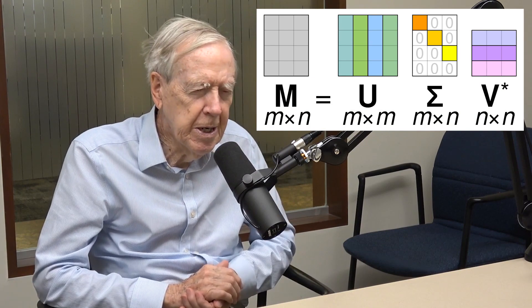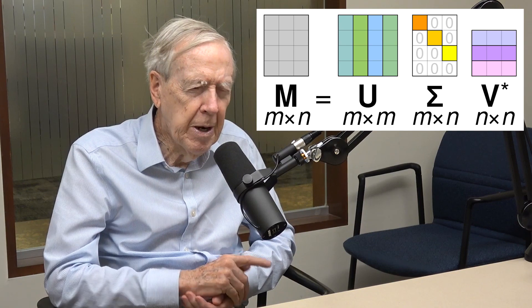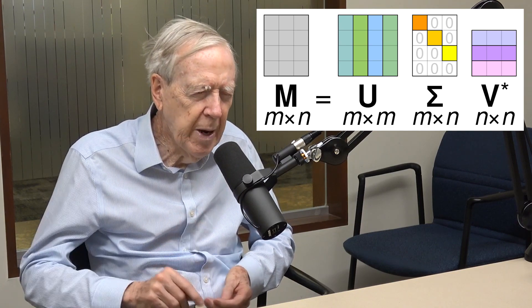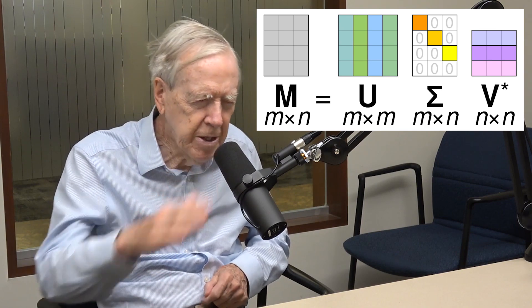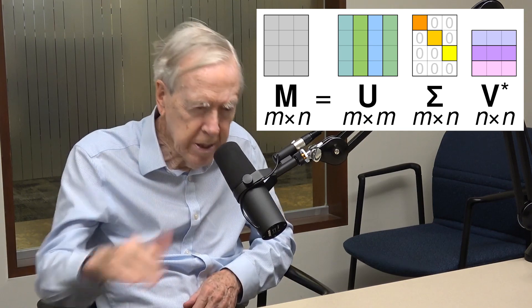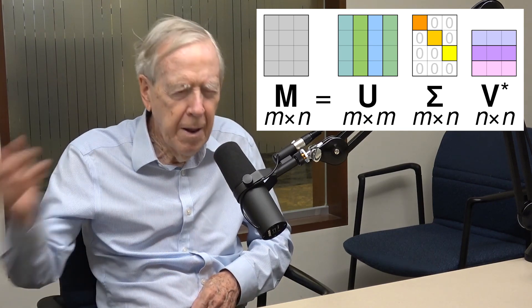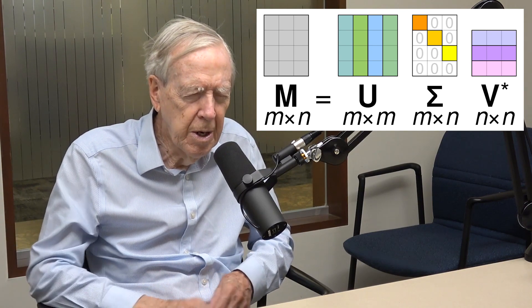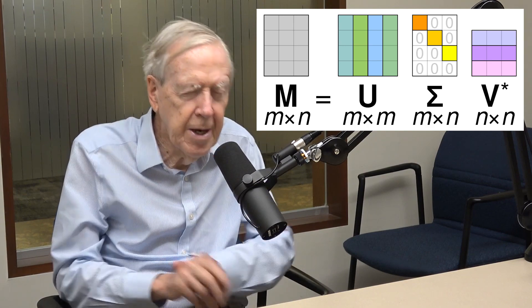What do you find beautiful about singular values? Here's the idea: every matrix — every matrix, rectangular, square, whatever — can be written as a product of three very simple special matrices. That's the theorem. Every matrix can be written as a rotation, times a stretch — a diagonal matrix, otherwise all zeros except on the one diagonal — and then the third factor is another rotation. So: rotation, stretch, rotation is the breakup of any matrix.